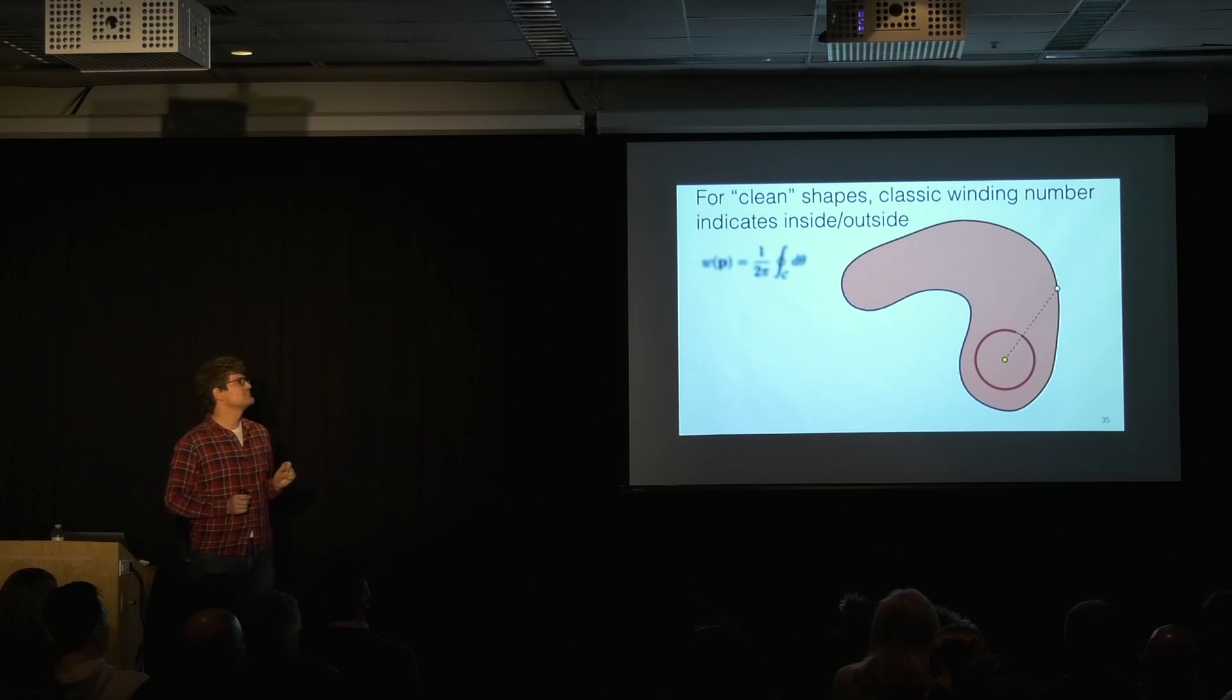The winding number we can define intuitively. For this curve and some query point, some point that we'd like to know is inside or outside, what we're going to do is we're going to walk around the curve and meanwhile trace what we're doing on a little circle around our query point. If we go all the way around that point, then we'll add up the length of that circle, which will be 2π, and we'll just call that 1. So we'll say we're inside of the shape.